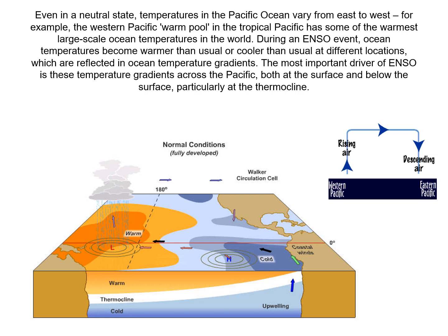Why does the ocean become so warm over the eastern tropical Pacific? Normally, in the tropical Pacific Ocean, the trade winds are persistent winds that blow westward from a region of higher pressure over the eastern Pacific towards a region of lower pressure centered near Indonesia. The trades create upwelling that brings cold water to the surface, and as this water moves westward it is heated by sunlight and the atmosphere.